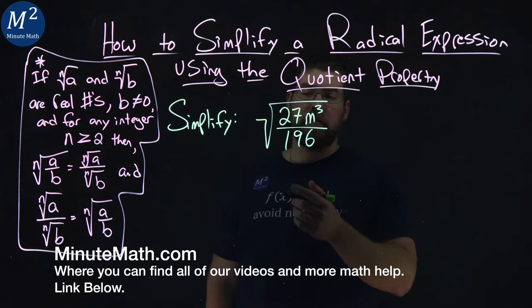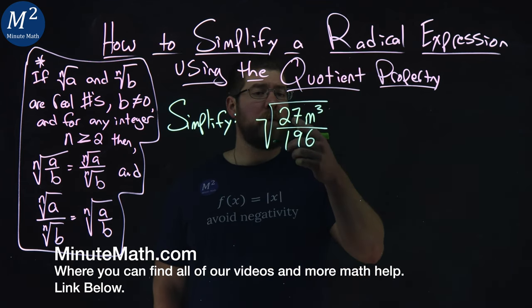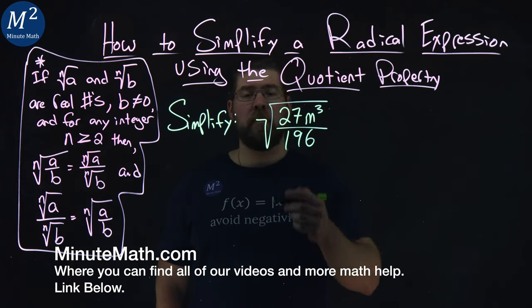We're given this problem here: simplify the square root of 27m to the third power over 196.